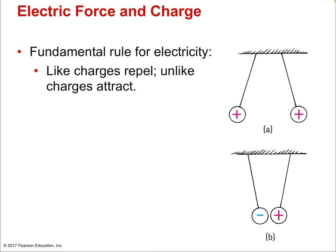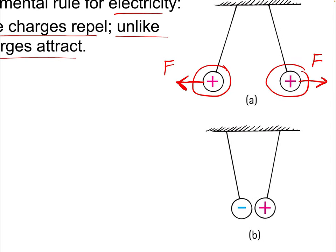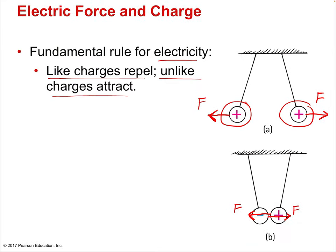The fundamental rule for electricity is that like charges repel and unlike charges attract. For example, if you have two positive charges — like two positively charged metal balls — they experience a repulsive force away from each other. Due to Newton's third law, those two forces are equal in magnitude and opposite in direction. If they were both negative, they would also repel. But if one is positive and one is negative, they attract and experience an attractive force toward each other.